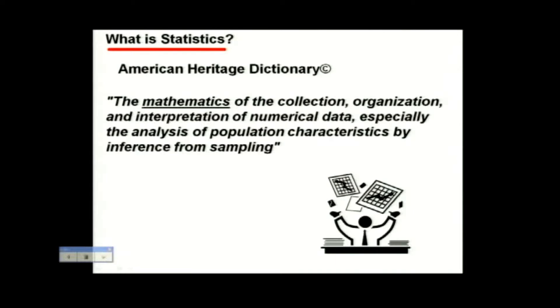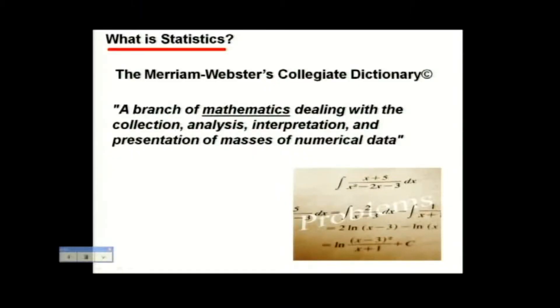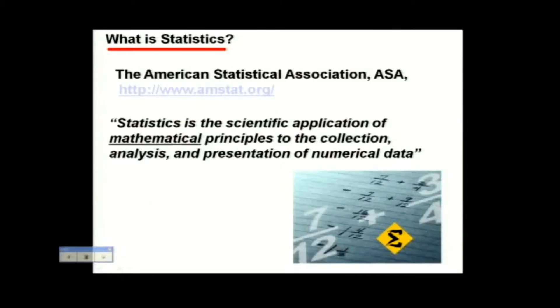It may be useful to start by defining statistics. The American Heritage Dictionary defines statistics as the mathematics of the collection, organization, and interpretation of numerical data, especially the analysis of population characteristics by inferences from sampling. The Webster Dictionary defines statistics as a branch of mathematics dealing with the collection, analysis, interpretation, and presentation of masses of numerical data. Even the American Statistical Association defines statistics as the scientific application of mathematical principles to the collection, analysis, and presentation of numerical data.